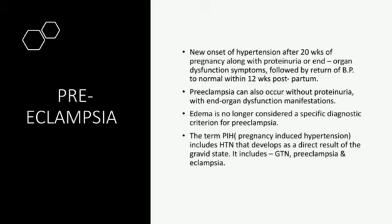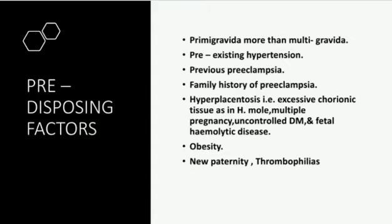Preeclampsia features may appear even before the 20th week in cases of hydatidiform mole and acute polyhydramnios. Predisposing factors: number one is primigravida — either young age or elderly — it is more common than in multigravida. Then pre-existing hypertension, family history of hypertension, preeclampsia, eclampsia, or hyperplacentosis — excessive chorionic tissue as in hydatidiform mole — multiple pregnancy, uncontrolled diabetes mellitus, and fetal hemolytic diseases.